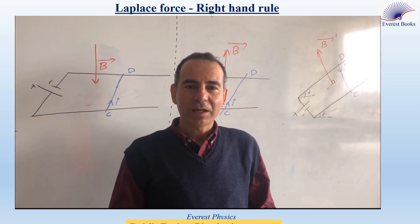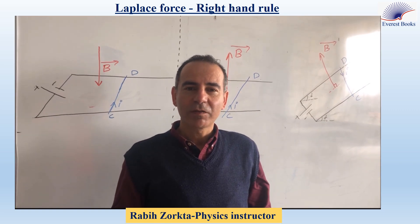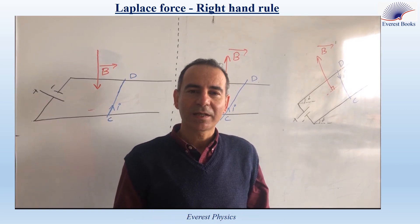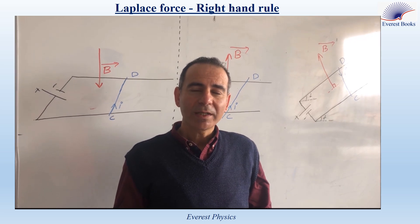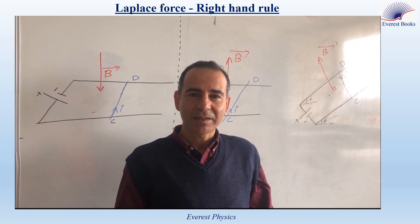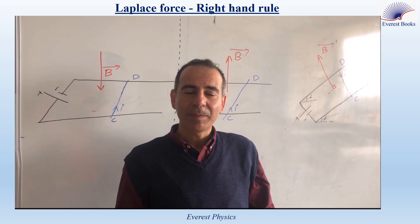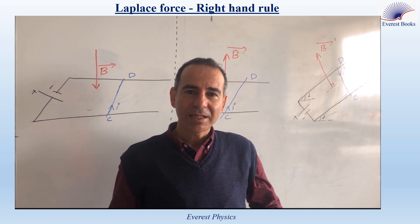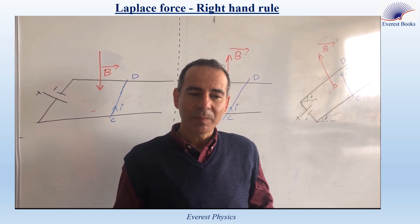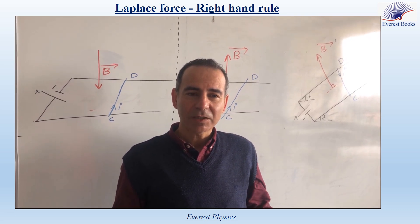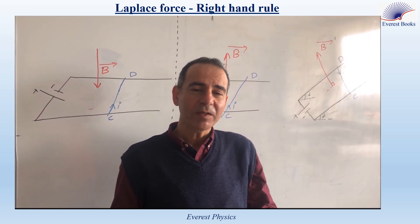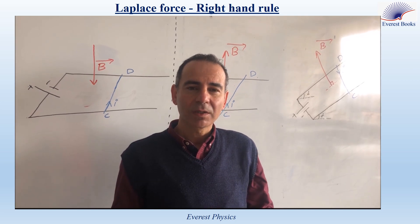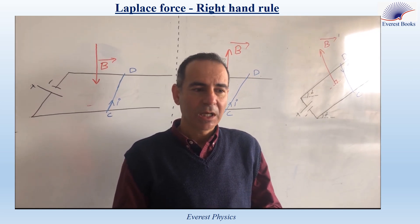This experiment is about the determination of the direction of the Laplace force using the right hand rule. When a straight conductor carrying a current is placed in an external magnetic field, this conductor is acted upon by a magnetic force called the Laplace force, and in some references, this force is called the electromagnetic force.